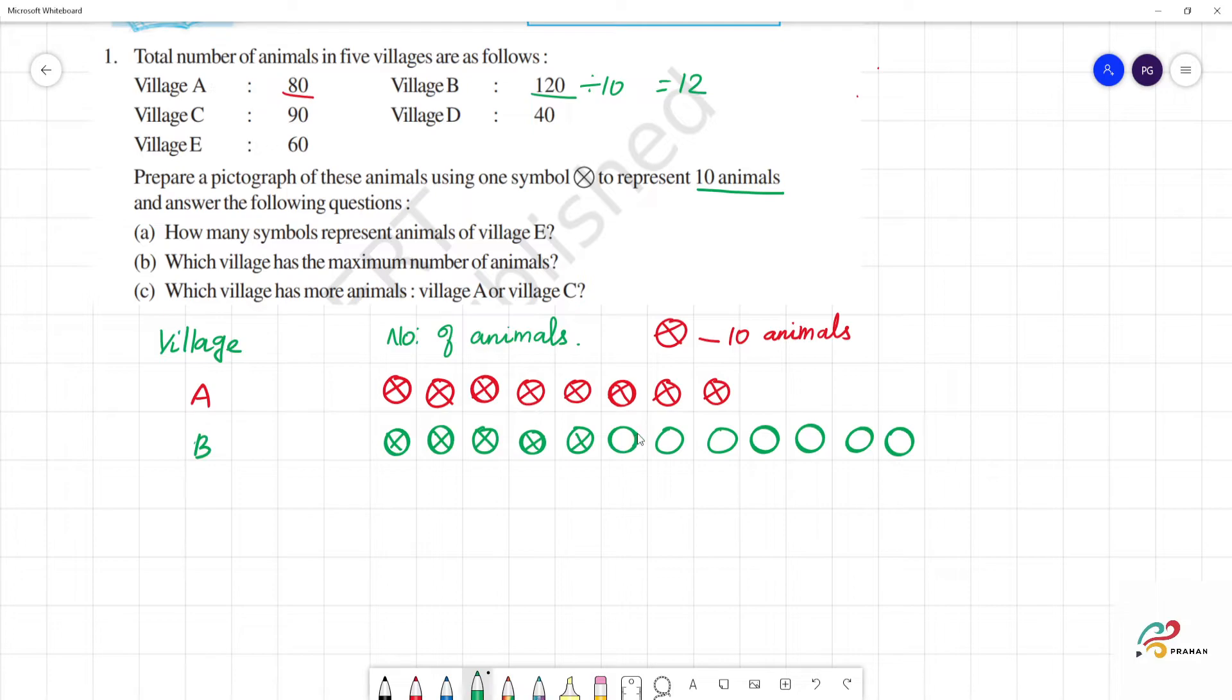So, 1 picture represents 10 animals. So, 120 animals, how many pictures? 12 pictures. Clear. Next one is C. In village C there are 90 animals. So, we can use 9 pictures: 1, 2, 3, 4, 5, 6, 7, 8, 9. So, totally 9.